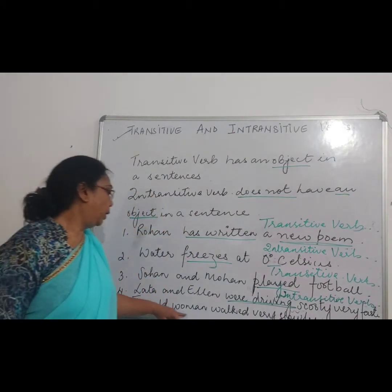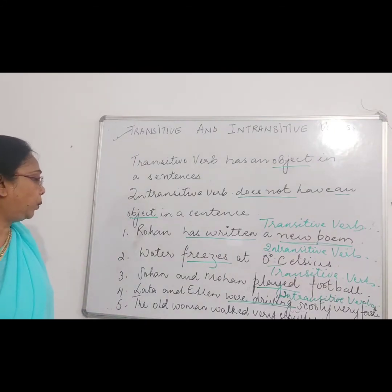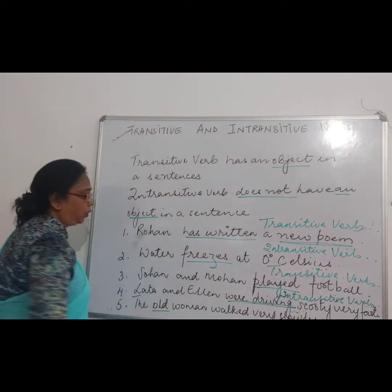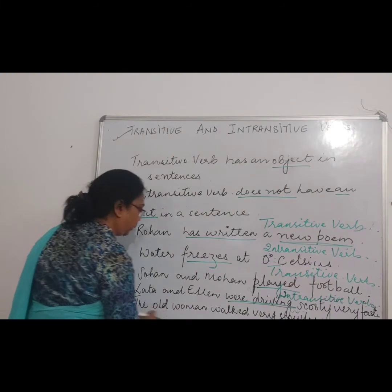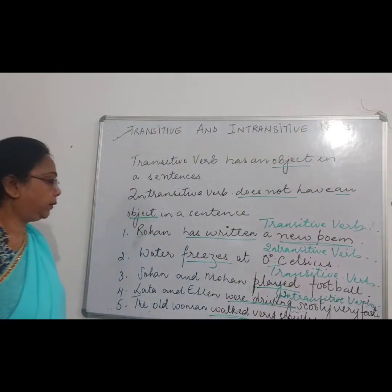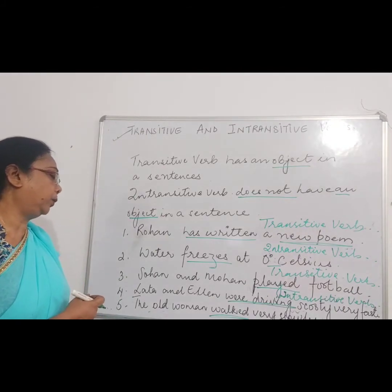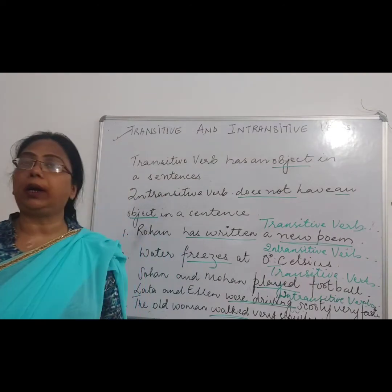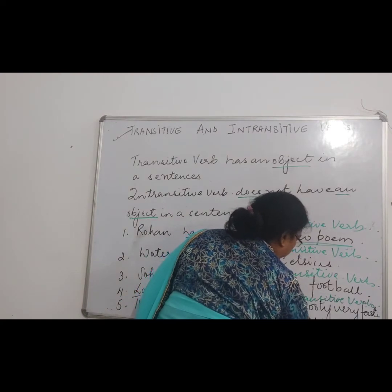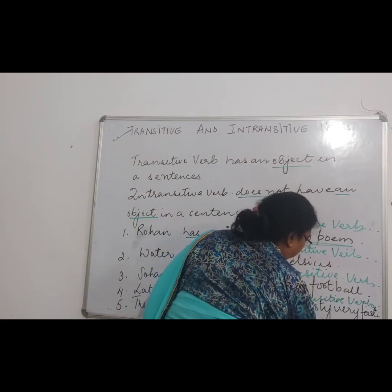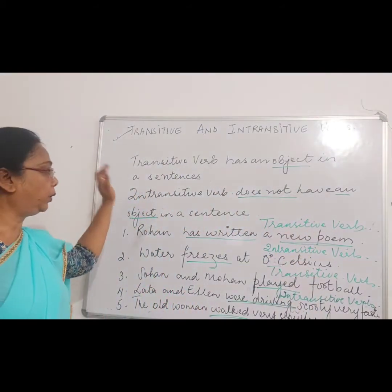Next: the old woman walked very slowly. Now which is the verb here? 'Walked' is the verb. So hence it is showing — 'slowly' is not an object here, so this sentence does not have a direct object. This is the way you are going to do these exercises.